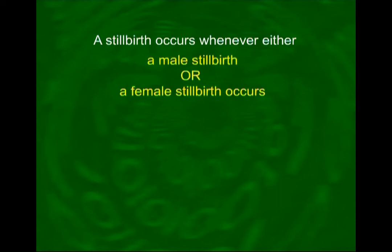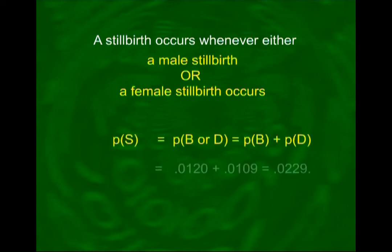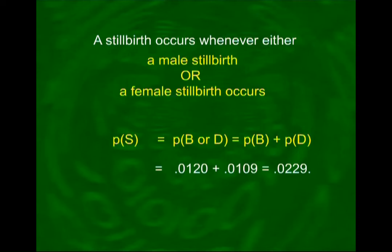If we are interested in finding the probability of a stillbirth, the approach is similar. A stillbirth occurs whenever either a male stillbirth or a female stillbirth occurs. So the proportion of stillbirths regardless of sex equals the sum of the proportions of these two events: P(stillbirth) = P(male stillbirth) + P(female stillbirth) = 0.0120 + 0.0109 = 0.0229.